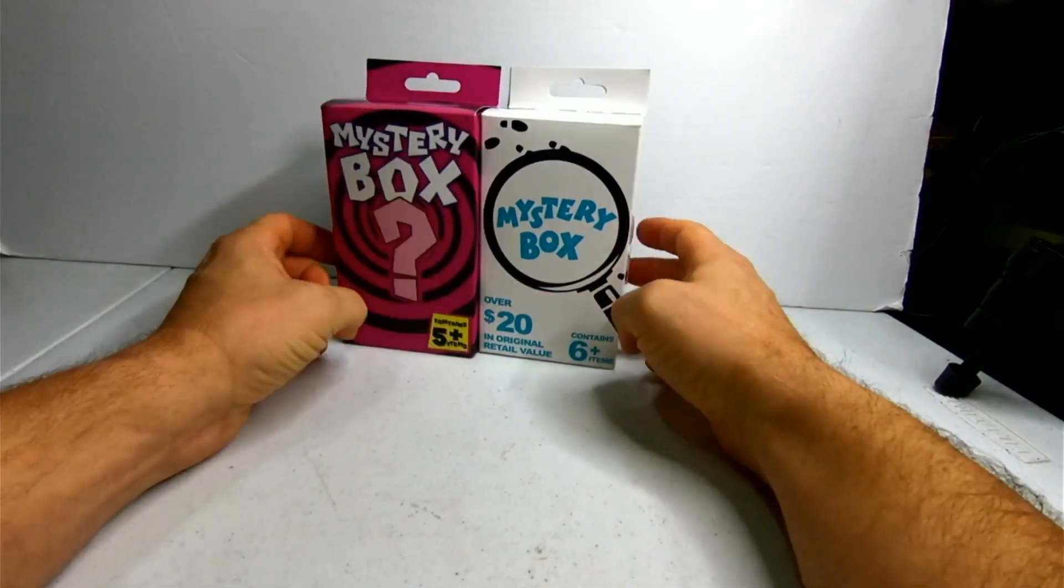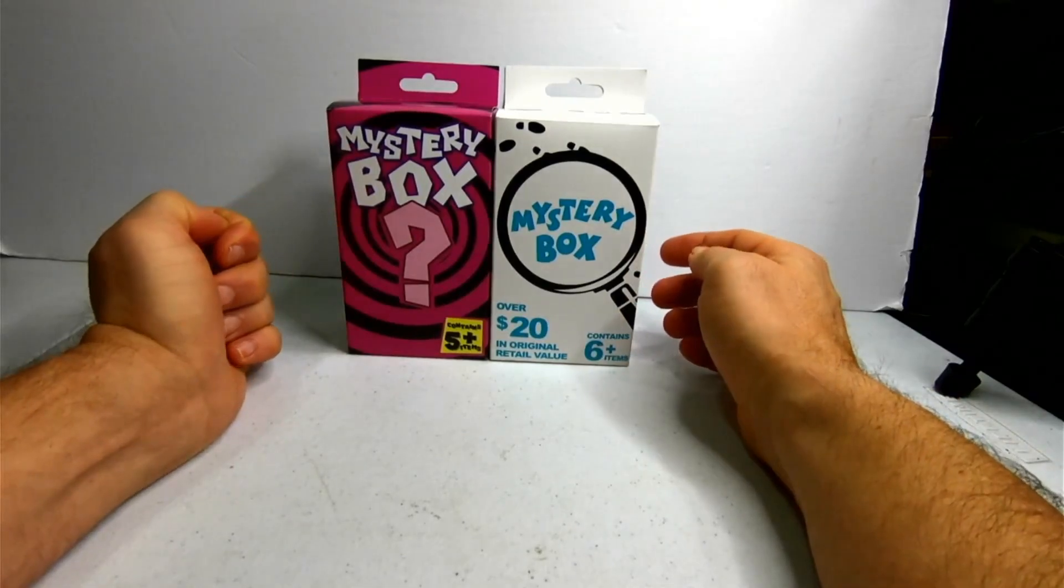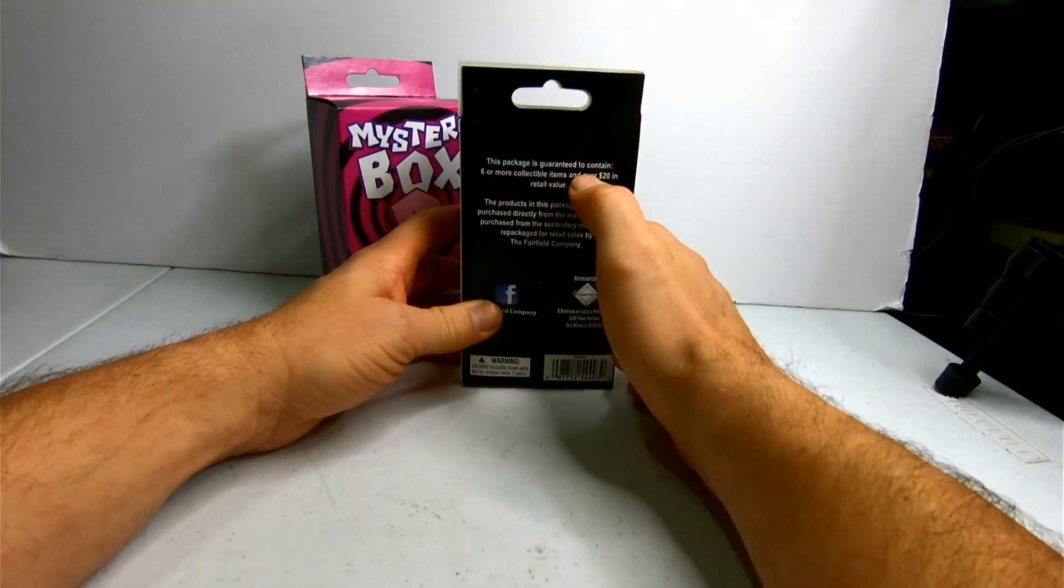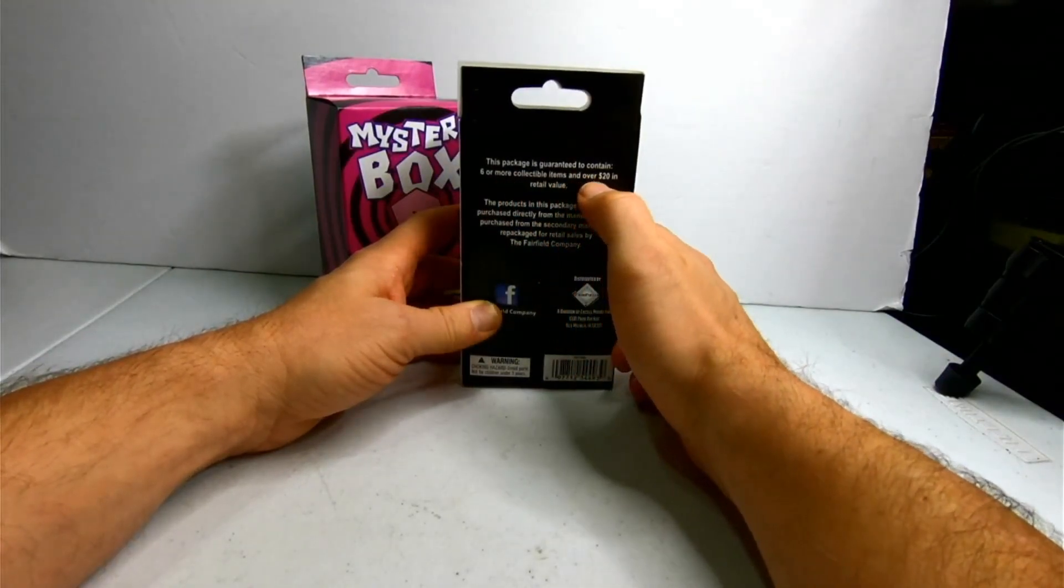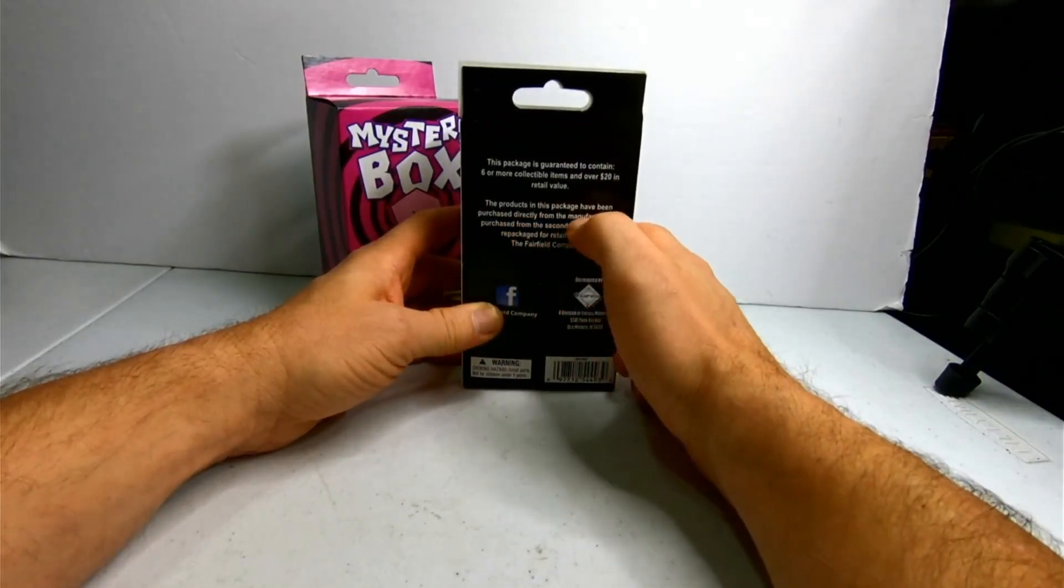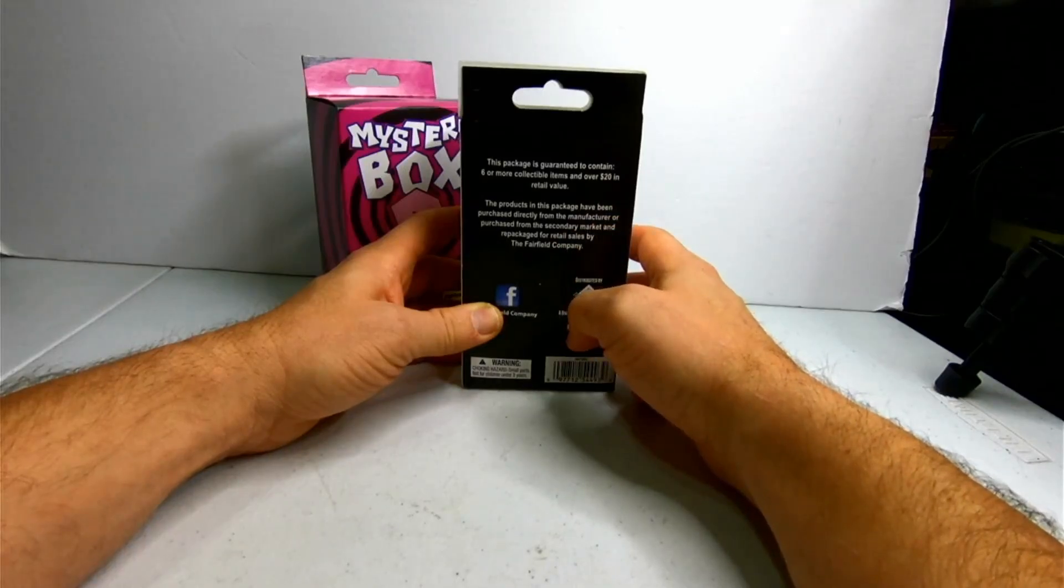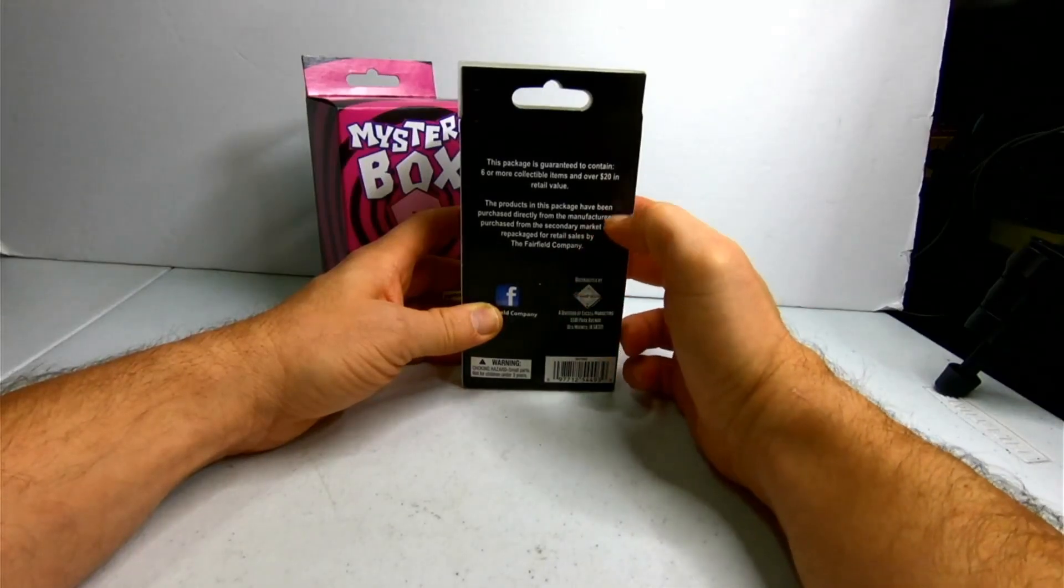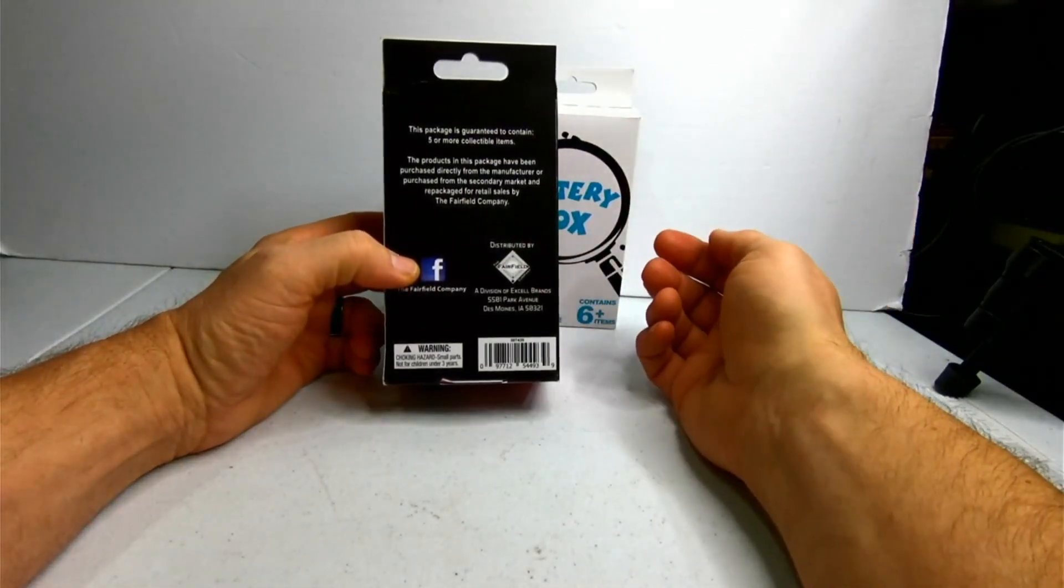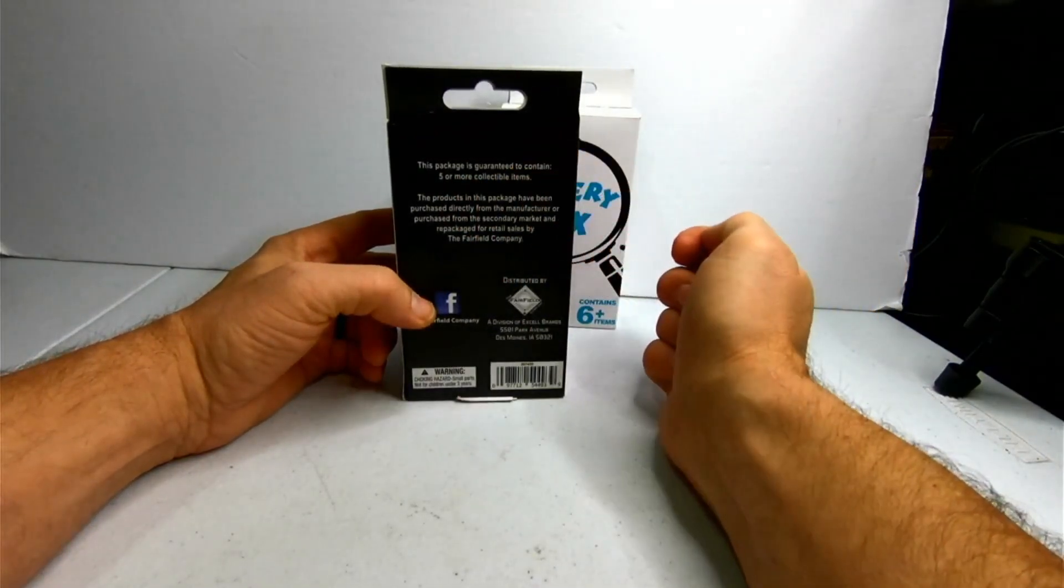Now, one of them claims to have $20 original retail value, the other one makes no such claims. So we're going to look and see what this one says on the back. This package is guaranteed to contain six or more collectible items and over $20 in retail value. The products in this package have been purchased directly from the manufacturer or purchased from the secondary market and repackaged for retail sales by the Fairfield company. This one says something similar except for the $20 in value thing. It just says guaranteed to contain five or more collectibles.